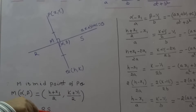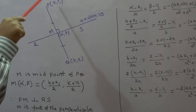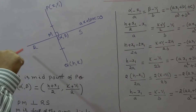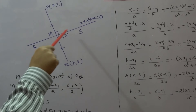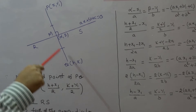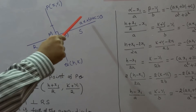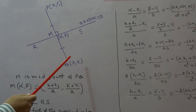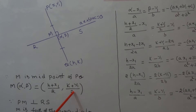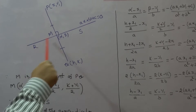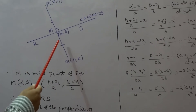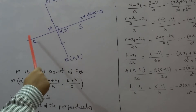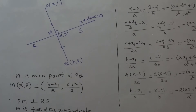Let us see the derivation. If M is the midpoint of PQ and PQ is perpendicular to the line RS, we say Q is the image of P with respect to the line RS, that is ax + by + c = 0. Since M is the midpoint of PQ, M(α, β) = ((h + x1)/2, (k + y1)/2).